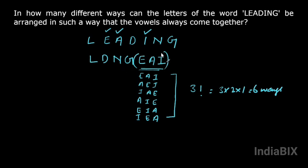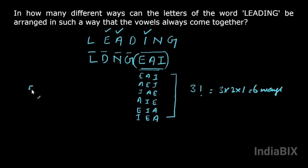Now there are four consonants. Let us treat these three vowels as one single entity. So we have one, two, three, four consonants plus one entity — that is five items total. These three vowels should always be together, so they count as one entity. Among themselves they can be arranged in six ways, that is three factorial ways. Therefore the five items can be arranged in five factorial ways.